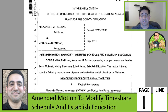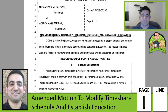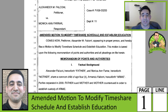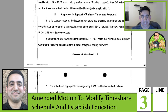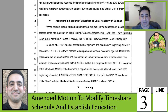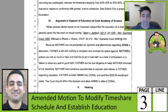Here we have the amended motion to modify timeshare schedule and establish education. As I mentioned, the motion to modify timeshare schedule and establish education is what this amended motion mirrors — virtually identical to that other document we already went over, with one exception: a citation to the case. Here on page three, I mentioned Mack v. Ashlock when I quoted 'when parents do not agree on an important issue, they come to the court on equal footing,' and what I meant to add is that this was affirmed in Rivero v. Rivero, the 2009 landmark case in Nevada. That's the only difference I can find in this amended motion.